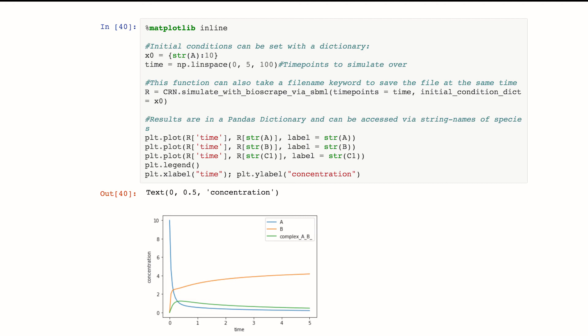And then I can plot this very easily using the results. And you see that A is going to go down. My complex goes up and then down again. And B is slowly produced.